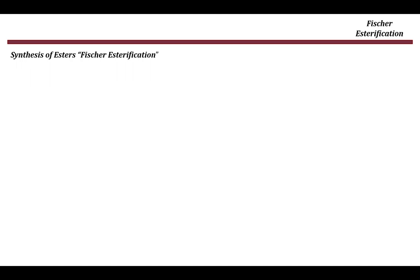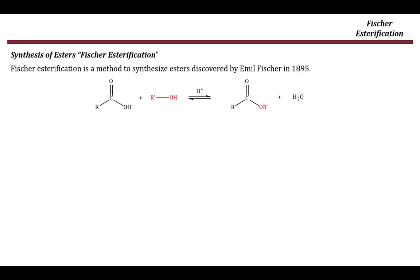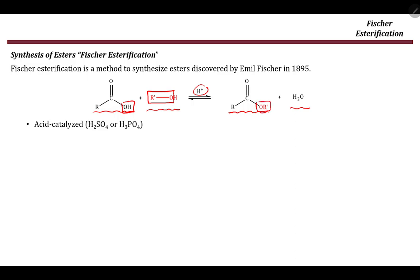The first method to prepare esters is Fischer esterification, discovered by Emil Fischer in 1895. In this method, we start with a carboxylic acid, add an alcohol in the presence of H⁺ — so this is an acid-catalyzed reaction — and this leads to formation of the ester plus H₂O. Basically, the OH group of the carboxylic acid is replaced by the alkoxy group. The catalyst is typically H₂SO₄ or H₃PO₄ in catalytic amounts. The reaction is reversible, which is one of its problems, so yields are not high unless distillation setups are used.